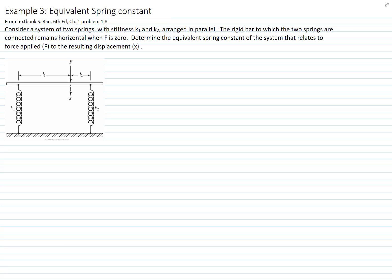Consider a system of two springs with stiffness K1 and K2 arranged in parallel. The rigid bar to which the two springs are connected remains horizontal when F equals zero, but as soon as we apply F, there is a displacement and a rotation of the bar. We want to find an equivalent spring constant that relates that displacement with the force F.